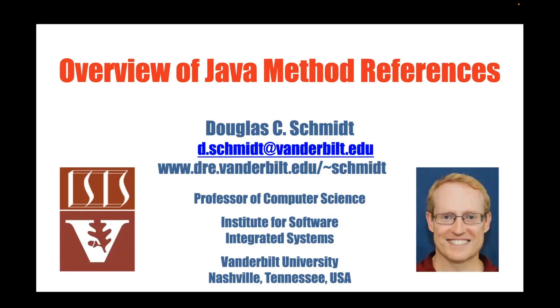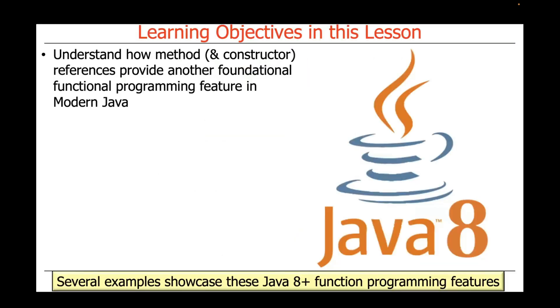Now that we've talked about Java Lambda expressions, let's turn our attention to a sibling concept called Java method references. In this lesson, we'll understand how method references and constructor references provide another important foundational functional programming feature in modern Java. We'll also talk about several examples that showcase these functional programming features that occur in Java 8 and beyond.